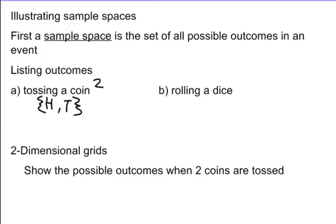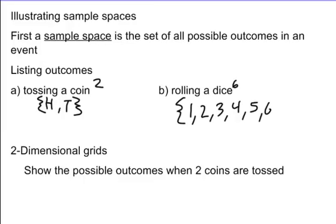If we're rolling a fair dice, we're going to have six different types of outcomes. These outcomes are going to be one, two, three, four, five, and six.